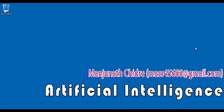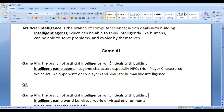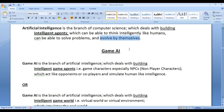Hello friends, welcome to artificial intelligence video tutorials series. In the previous video tutorials we understood that artificial intelligence is the branch of computer science which deals with building intelligent agents which can think intelligently like humans, can solve problems and evolve by themselves.